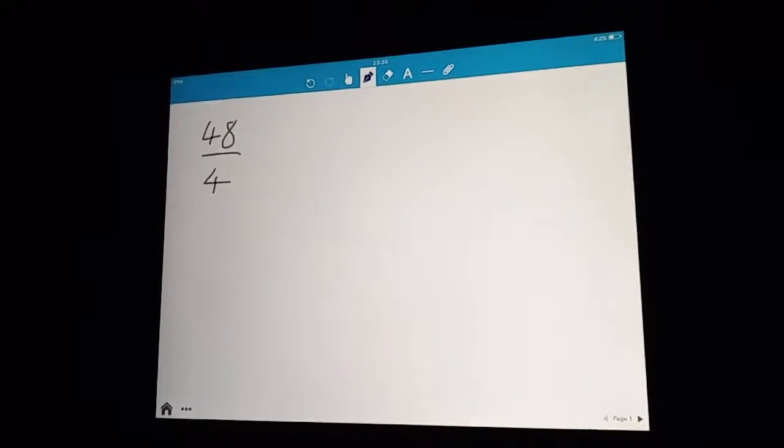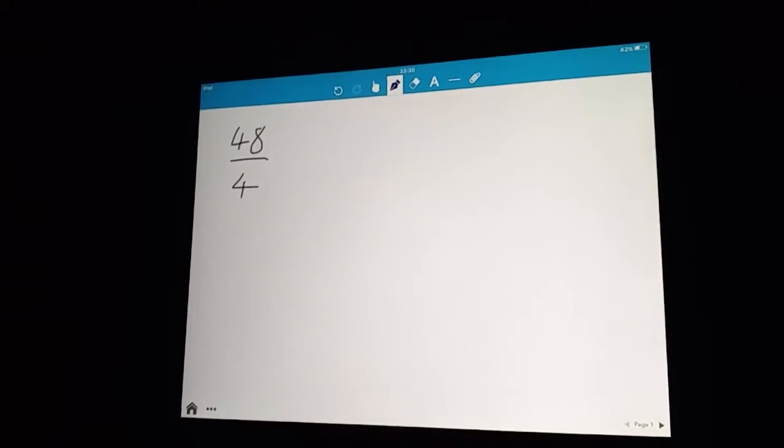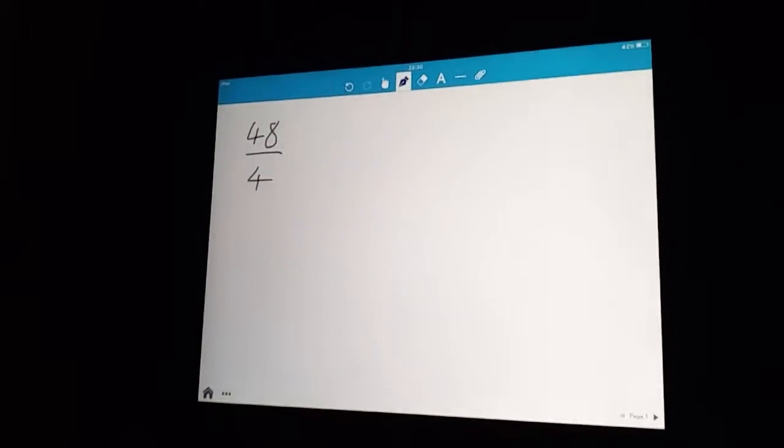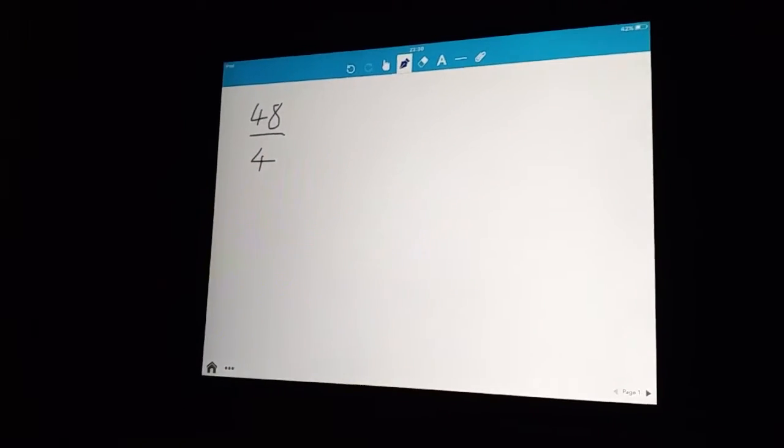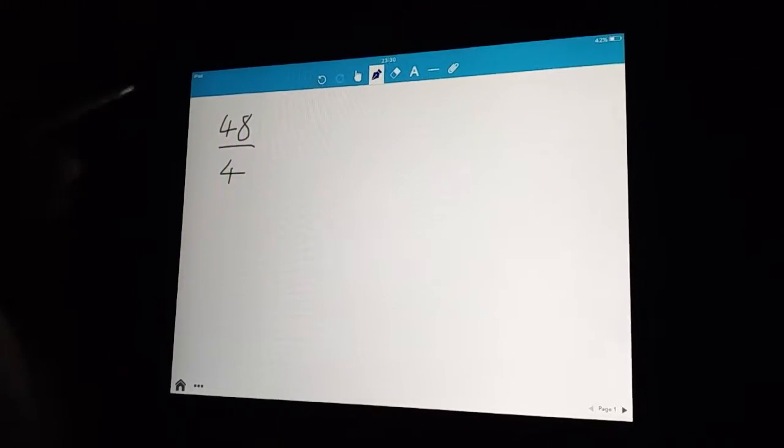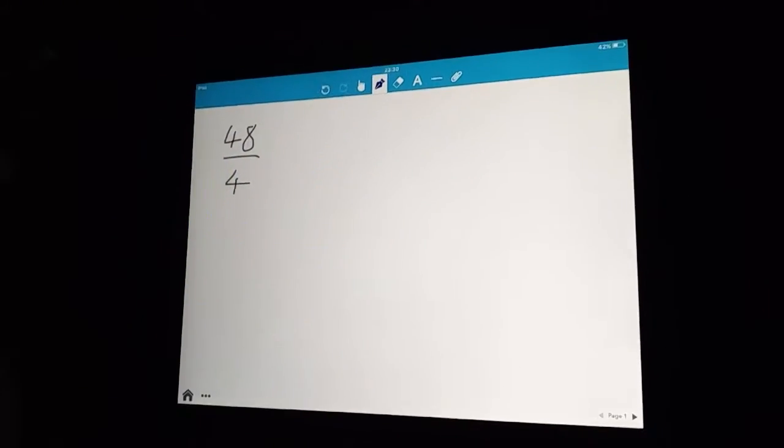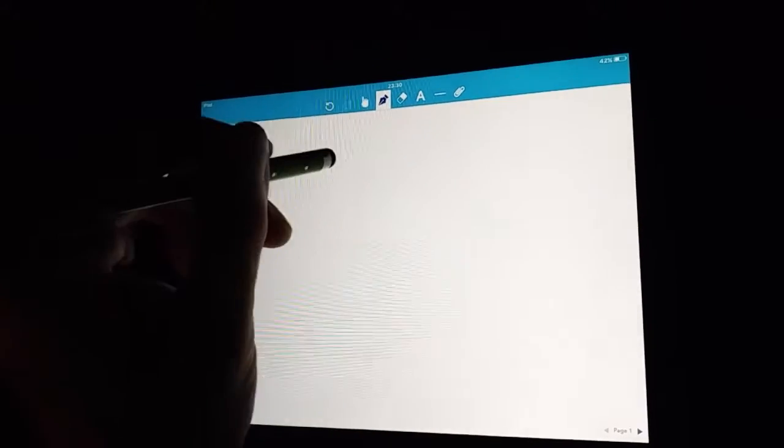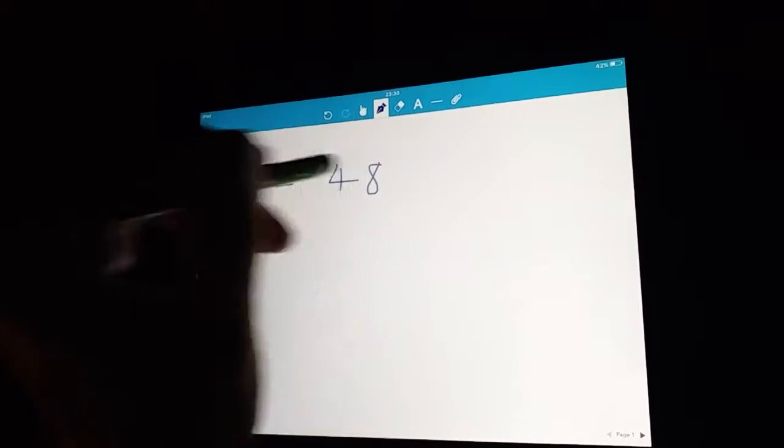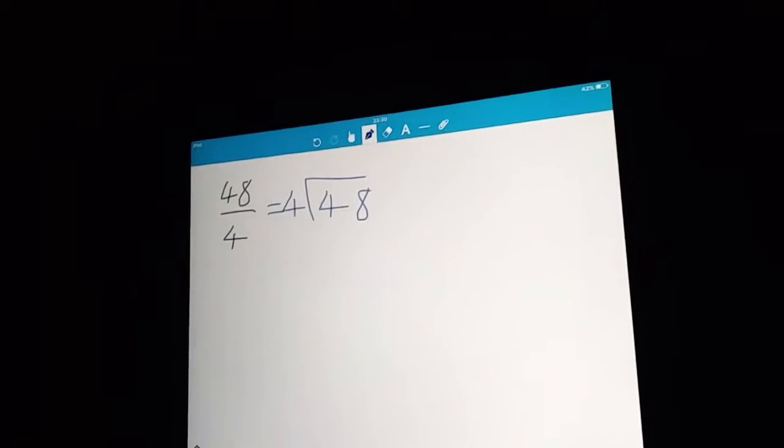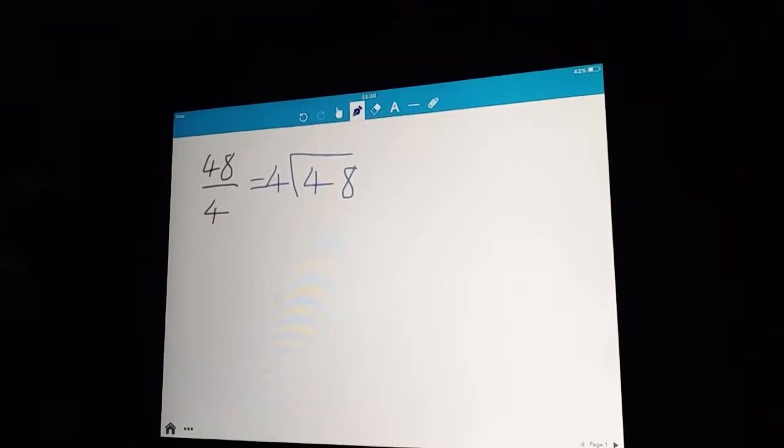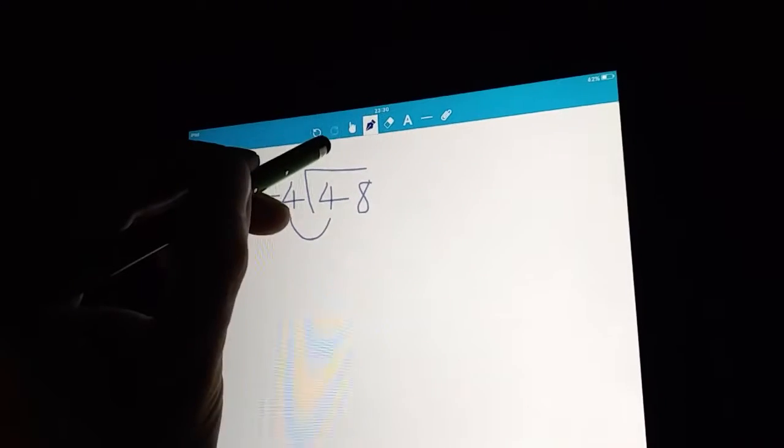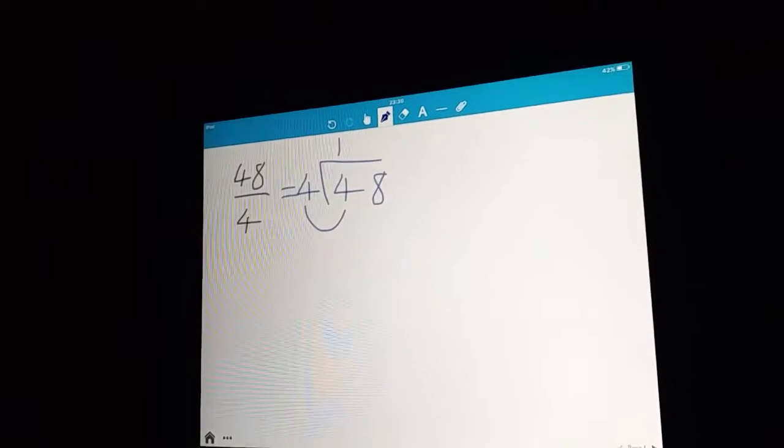I'm going to teach you how to divide big numbers by big numbers. Let's start with a small, easy example. If you've got 48 divided by 4, the only way to do that without a calculator is to use the bus stop method, which I'll demonstrate now. We divide the 4 into the 48. This is a really easy example. So we say how many 4s go into 4? Well that's 1, because 4 divided by 4 is 1.